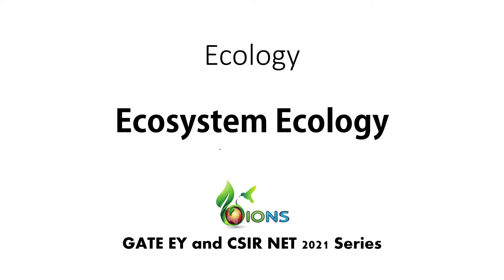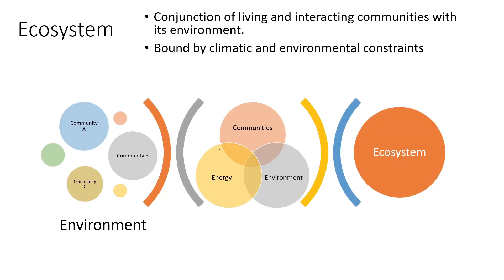Now I'll talk about ecosystem on a larger scale. Ecosystem involves multiple communities interacting together, and they are regulated by specific climatic or ecological factors. Usually they are living in a certain sort of environment which is kind of restricted or specific to that community or group of different communities.